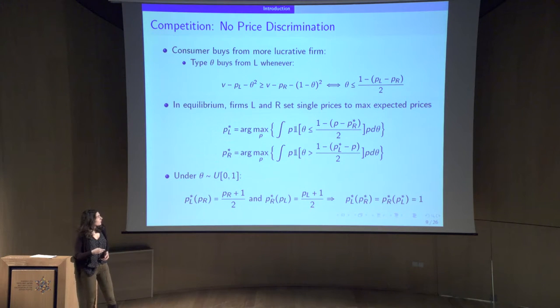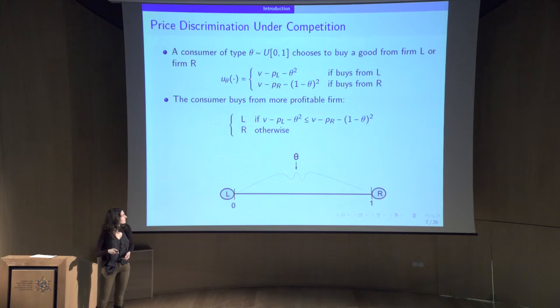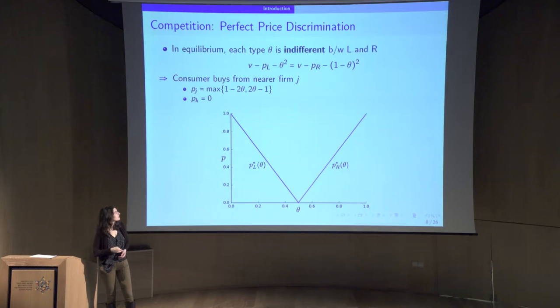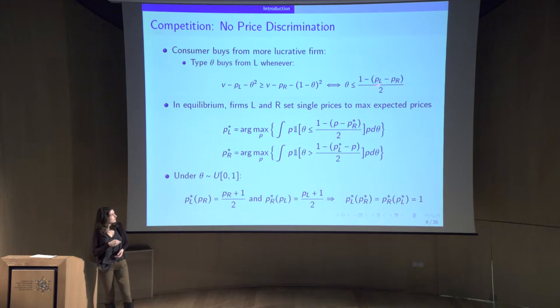What happens if there's no price discrimination, which is to say the firms have no idea where type theta is? We have a condition that the consumer will buy from firm L if and only if this is profitable. What that means is that there's a cutoff theta hat. It's going to be 1 minus the difference between PL and PR over 2 such that everyone left of this cutoff is going to buy from firm L and everybody else is going to buy from firm R. Knowing this, they maximize their expected profits just like the monopolist does. In equilibrium under the uniform distribution, they both arrive at a price of 1.